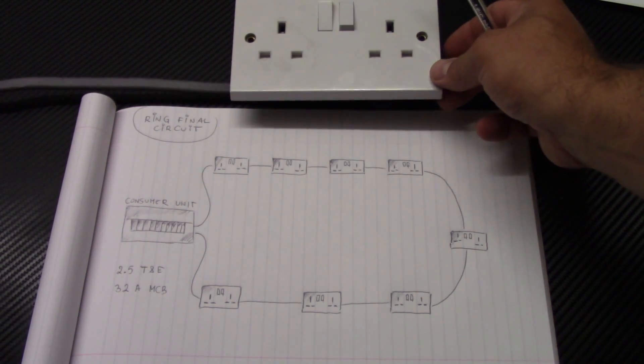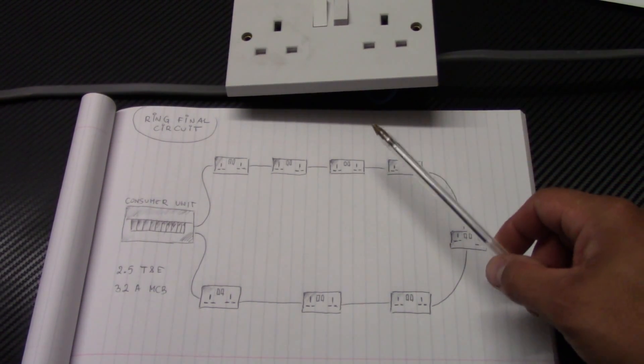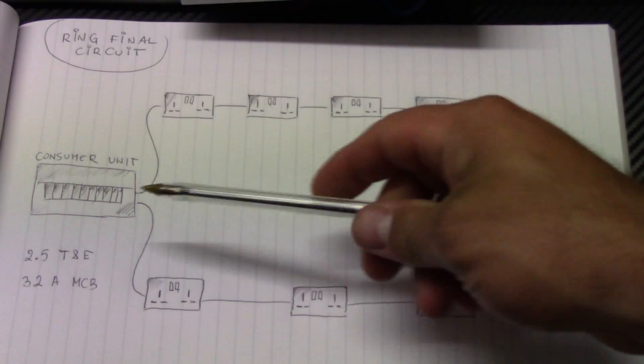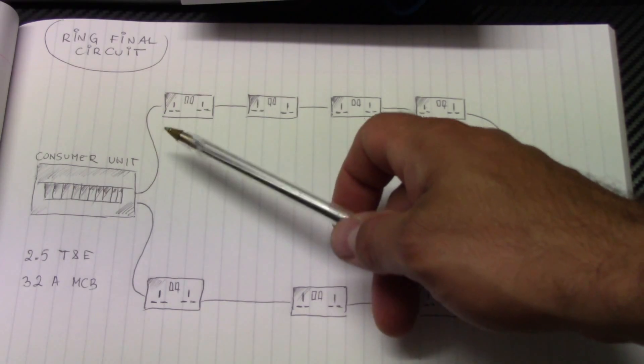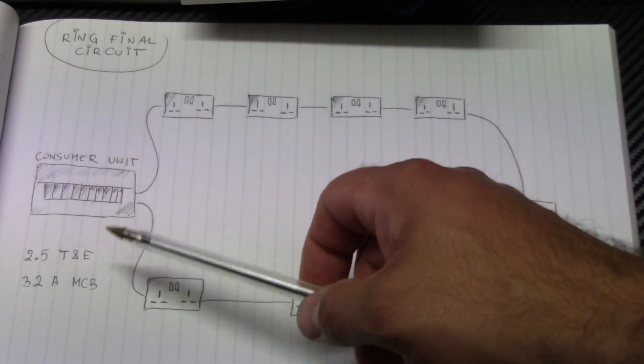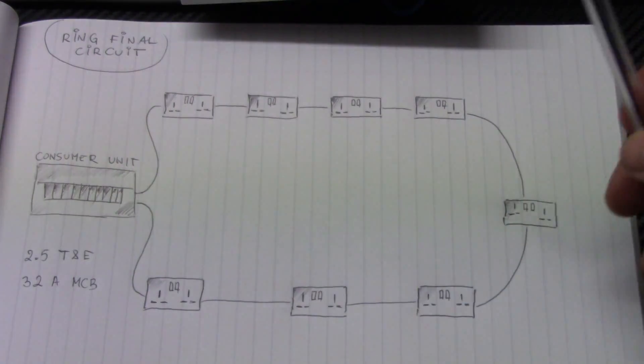But before I show you the wiring, I just want to quickly explain how the ring final circuits are connected. The cable used in ring final circuits is 2.5 twin and earth and is protected by 32 amp MCB at the consumer unit.